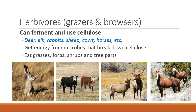Think about herbivores, the grazers and browsers on rangelands. What's unique about them is that they can ferment cellulose. Cellulose is the compound in plants that is not digestible by mammalian systems, but many mammals have created a relationship with microbes in their gut that gives them the ability to digest cellulose. Those would include deer, elk, rabbits, sheep, cows, horses, etc. They get their energy actually from the microbes that break down the cellulose, so they can eat grass, forbs, shrubs, and trees.